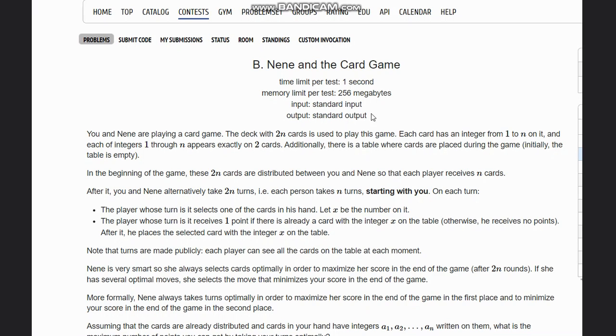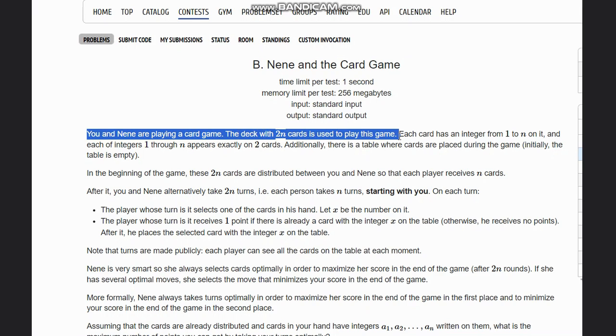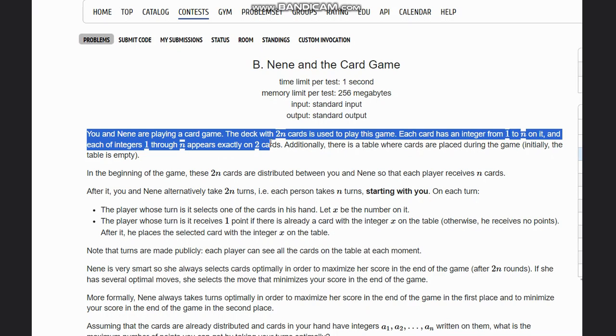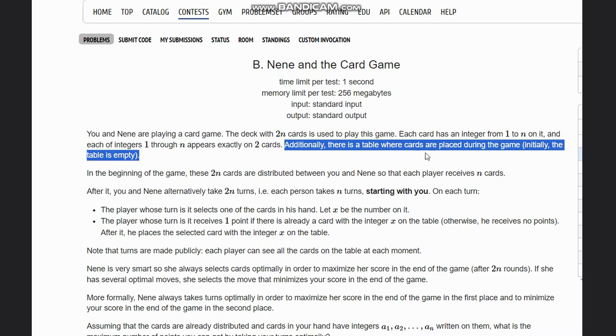Hello everyone, welcome to the channel. Here we are discussing question B, Neen and the Card Game by Codeforces. The problem states that you and Neen are playing a card game. The deck with two n cards is used to play this game. Each card has an integer from 1 to n on it, and each of the integers 1 through n appears exactly on two cards.